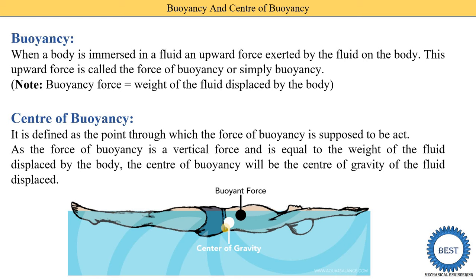There are three different categories: the buoyancy force is above the CG point, at the same point, or below the CG point. We will discuss this theory in detail in the conditions for buoyancy force in the next video. In summary, buoyancy is the vertical force applied by the fluid on the body, called the buoyancy force, and the point at which this buoyancy force is concentrated is called the center of buoyancy.